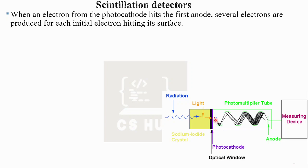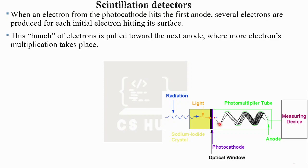The first electron generated by the photocathode hits the first anode. When an electron from the photocathode hits the first anode, several electrons are produced for each initial electron hitting its surface. So one electron strikes the anode and several electrons are generated. This bunch of electrons is then pulled towards the next anode, where more electron multiplication takes place.